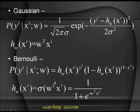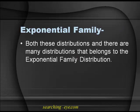The Bernoulli case leads to logistic regression, and the Gaussian case leads to least squares, where our learning hypothesis is the sigmoid function: 1 over 1 plus e to the negative of w transpose x_i. Both Gaussian and Bernoulli belong to the exponential family, and there are many other distributions that also belong to it, which we'll consider in upcoming lectures.